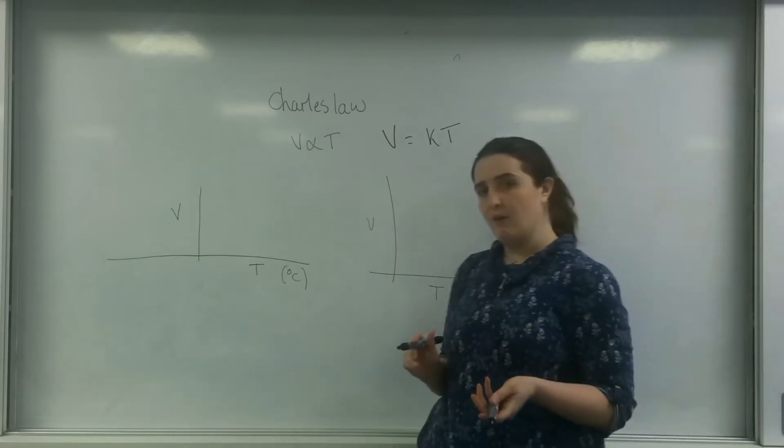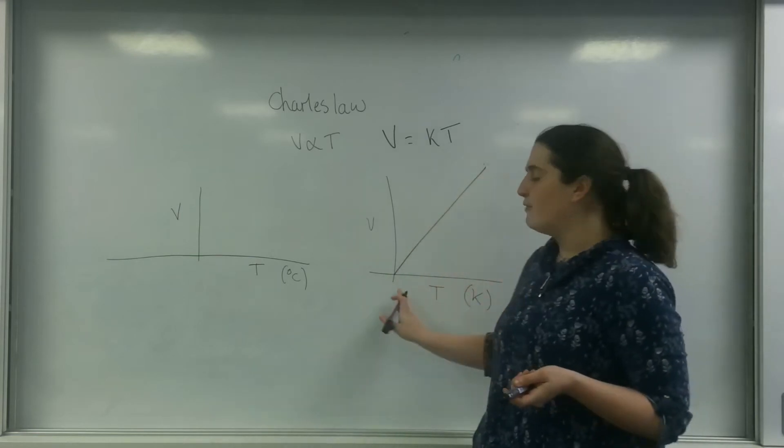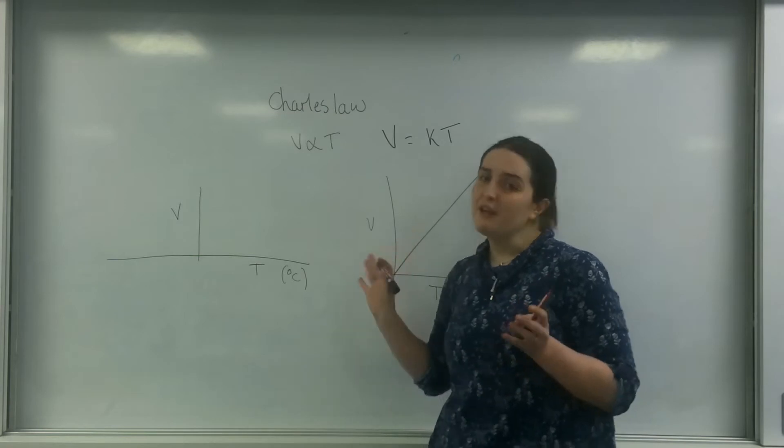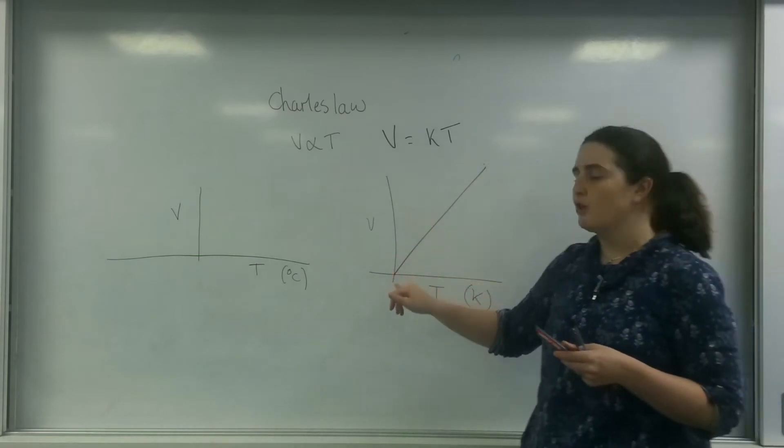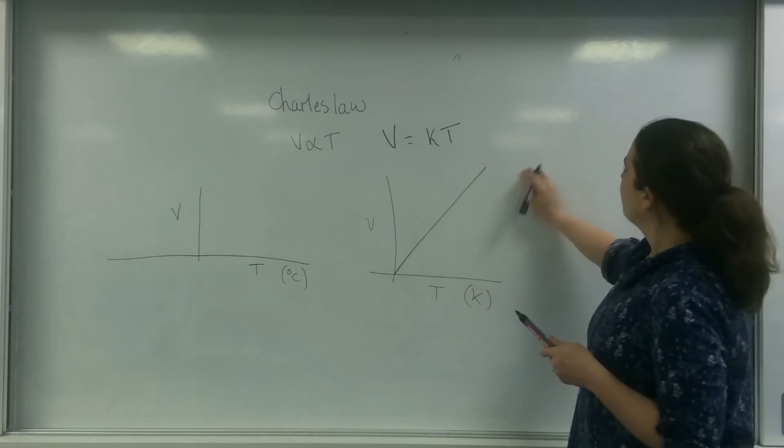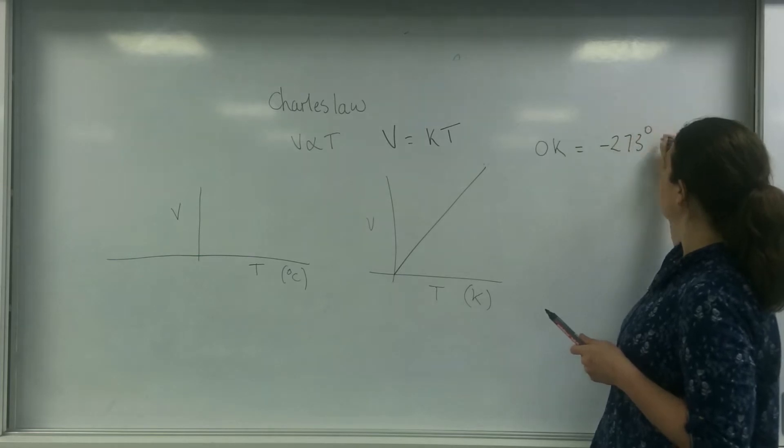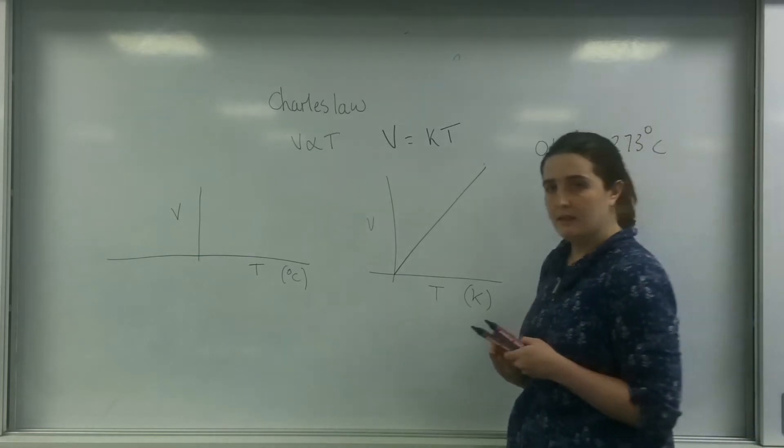Now, if it was in Kelvin, I know that when I have zero Kelvin, theoretically I would have zero volume. But just to recap, zero Kelvin equals minus 273 degrees C.